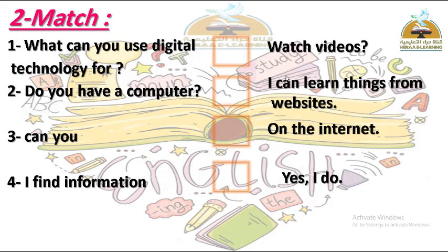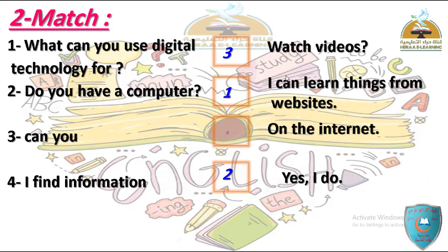Number one 'What can you use digital technology for?' هوصلها بـ 'I can learn things from websites'. Number two 'Do you have a computer?' - yes or no question - هوصلها بـ 'Yes, I do'. Number three 'Can you...?' هوصلها بـ 'watch videos'. Number four 'I find information' هوصلها بـ 'on the internet'.